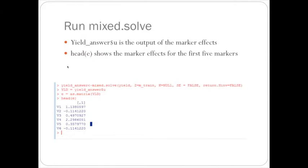So after running this command, I have the yield answer in dollar sign u as the marker effects, and then reset that to equal to e. So e is the matrix of the marker effects.